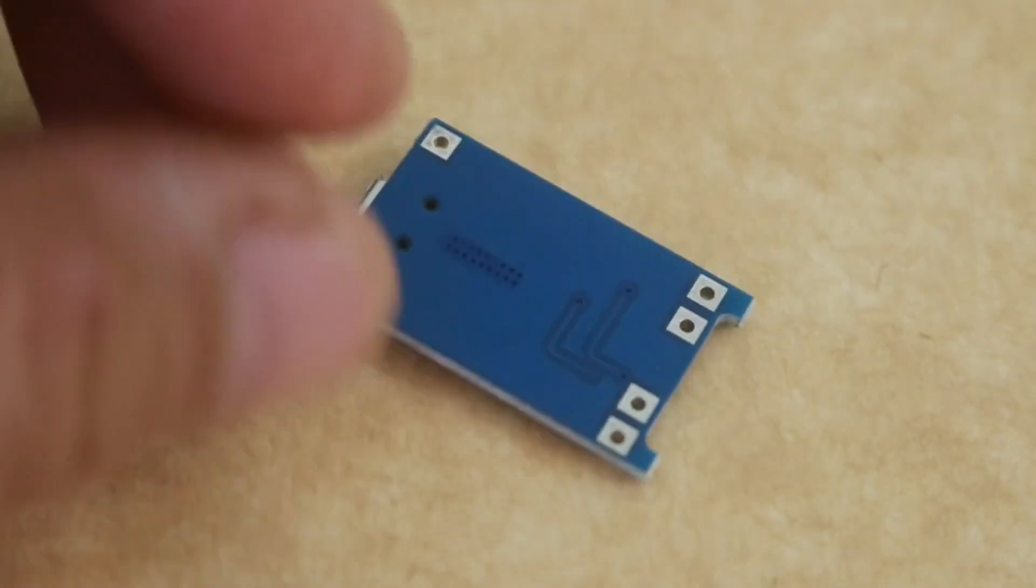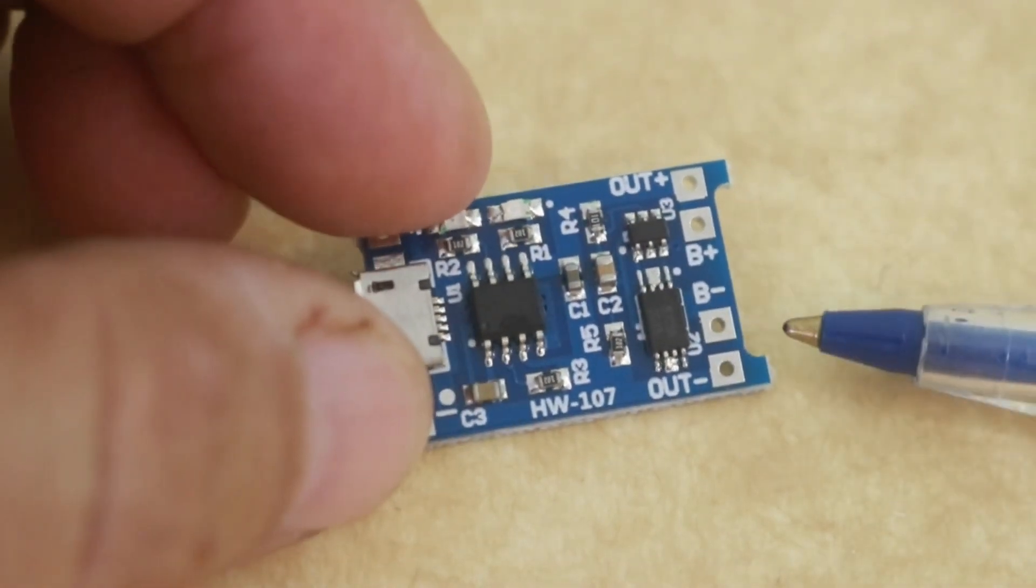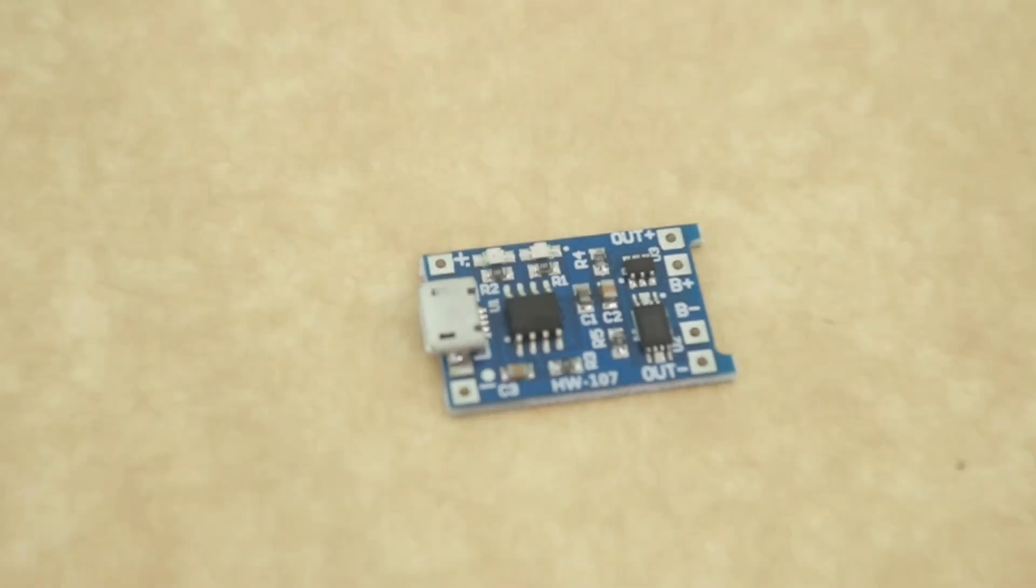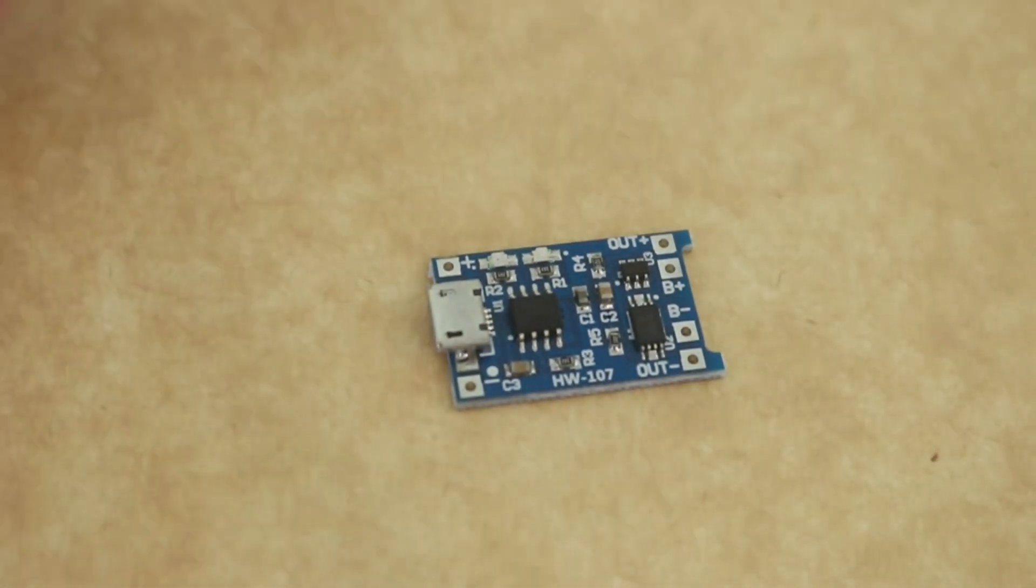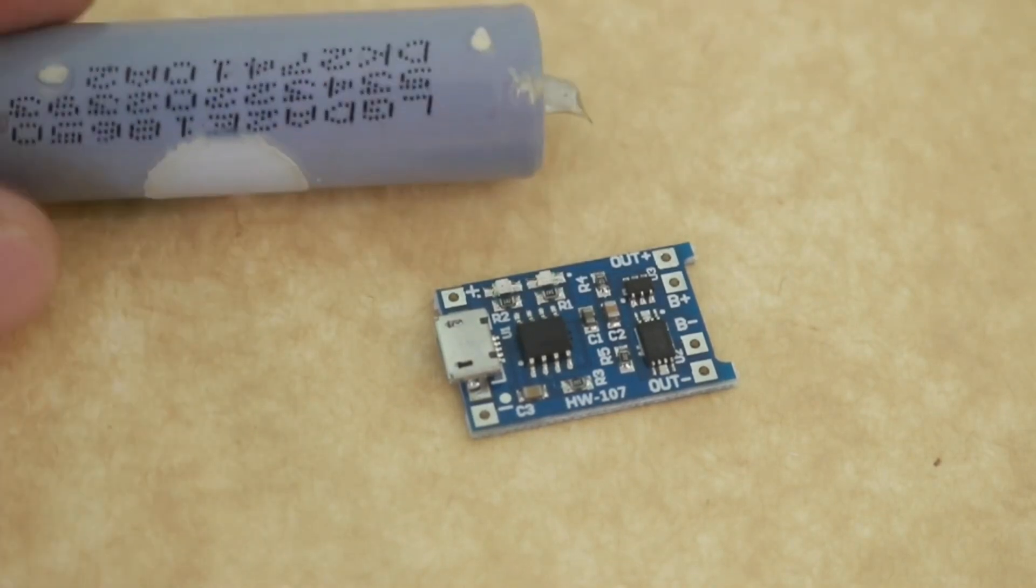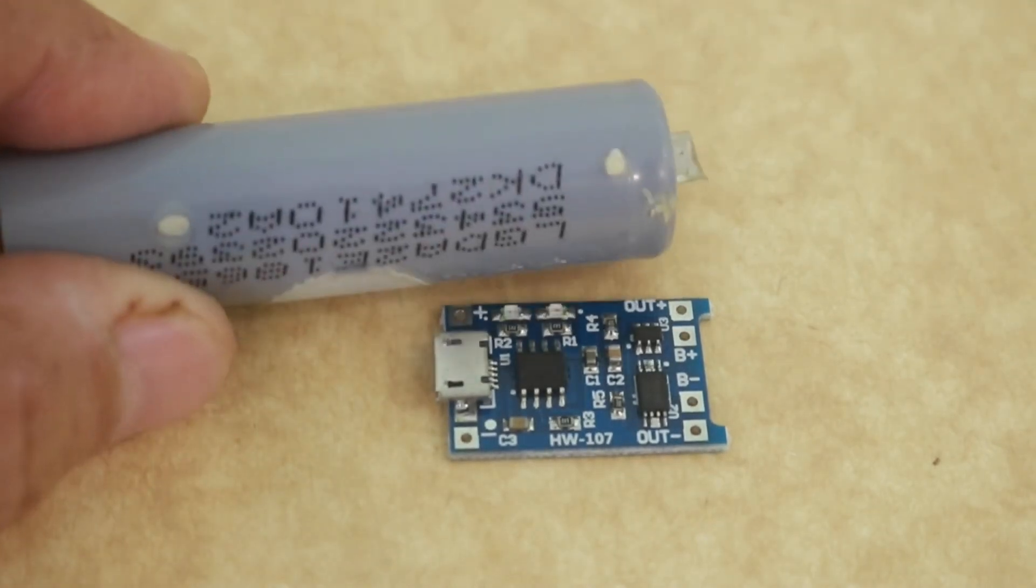Well, one feature of this module is that the charge current is 1A. And this is okay for the most common type of lithium-ion battery, the 18650 size like this one. 1A is okay for this battery.